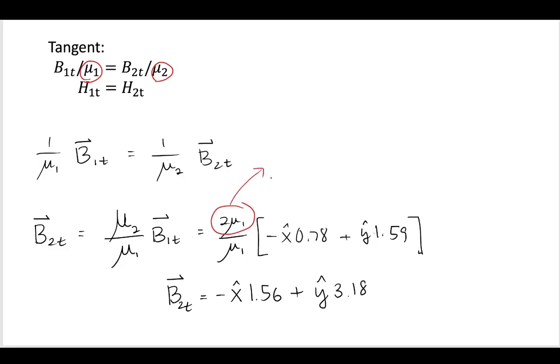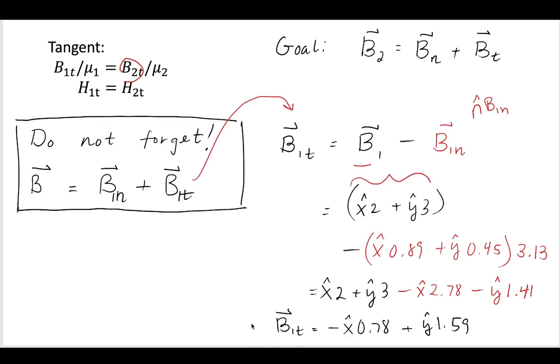Now recall in the problem statement, we were given this knowledge that mu2 would be two times mu1. So I've gone ahead and substituted it in. And in the previous slide, we have just found what B1 tangent vector is. That's what we arrived at down here. So this is our B1 tangent that we got to down here. So I've used it in this slide.